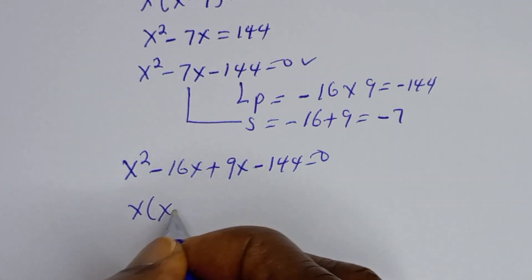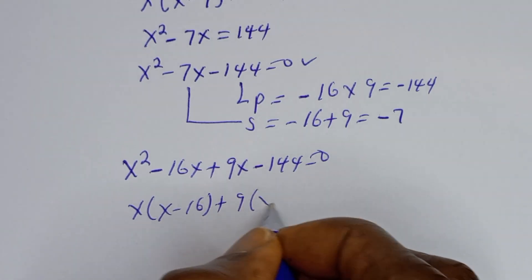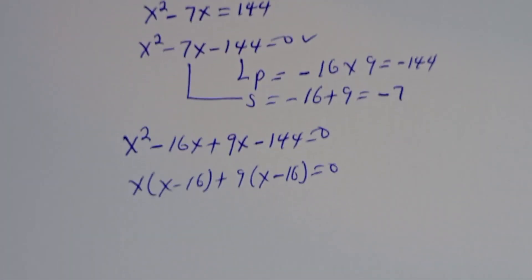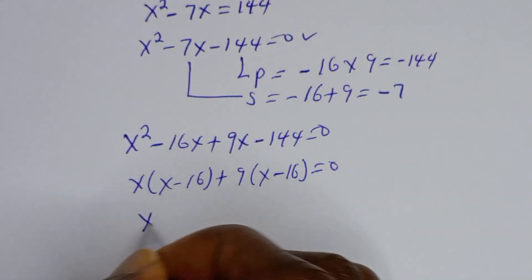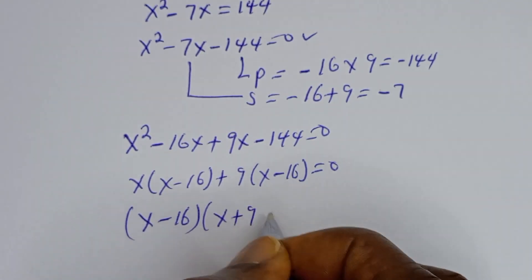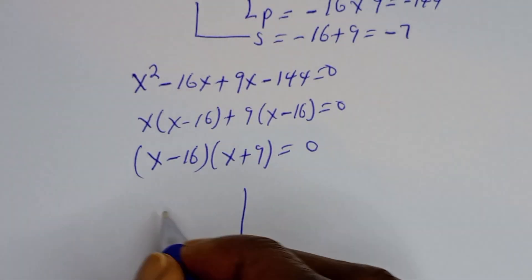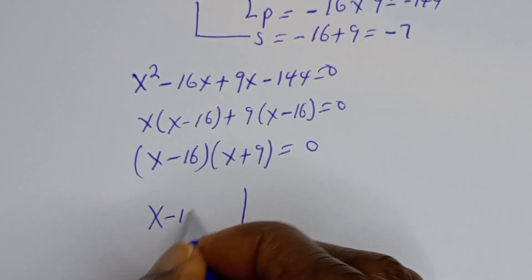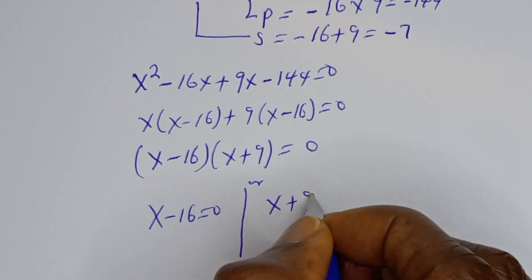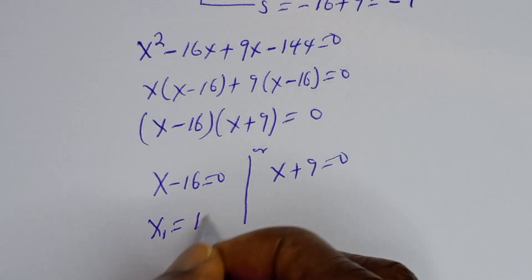Factoring: s bracket (s minus 16) plus 9 bracket (s minus 16) is equal to 0, giving (s minus 16)(s plus 9) is equal to 0. We have two cases: s minus 16 equals 0, or s plus 9 equals 0. From the first case, s₁ is equal to 16.